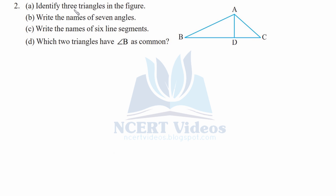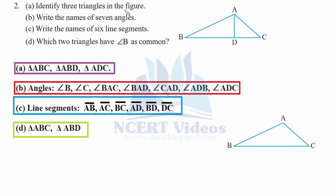That was question one. Question two: part A — identify three triangles in the figure. For simplicity, we have made another diagram. The three triangles are: triangle ABC, triangle ABD, and triangle ADC.